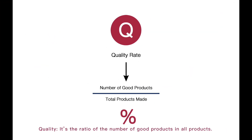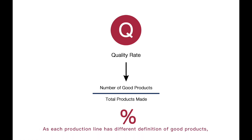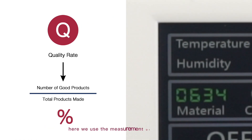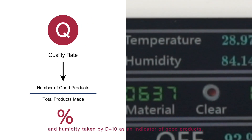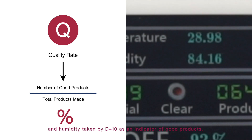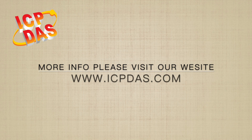Q — Quality: the ratio of the number of good products to all products. Each production line has a different definition of good products. Here we use the measurement of temperature and humidity taken by the DL10 as an indicator of good products. For more information, please visit our official website at www.icpdesk.com.